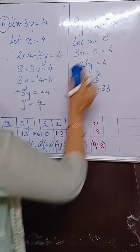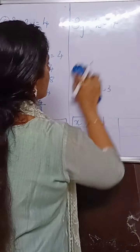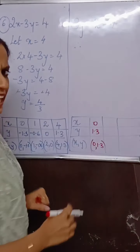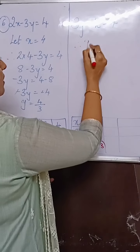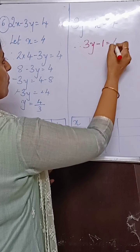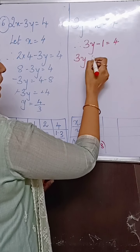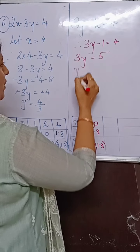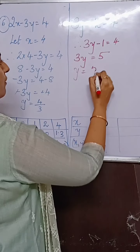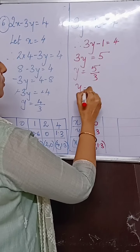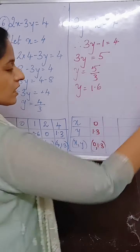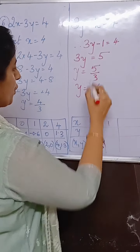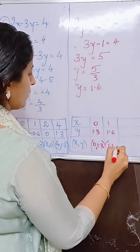Next take x as 1. So 3y minus 1 equals 4, giving 3y equals 5, therefore y equals 5 upon 3, which is approximately 1.6. When x was 1, you got y as 1.6. Ordered pair: 1 comma 1.6.